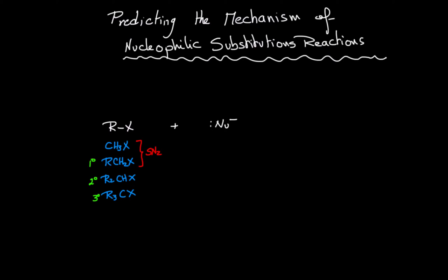Methyl halide and first degree alkyl halides always undergo the SN2 mechanism. However, a third degree alkyl halide always undergoes the SN1 mechanism. For a second degree alkyl halide, it can undergo either an SN2 or an SN1 mechanism.